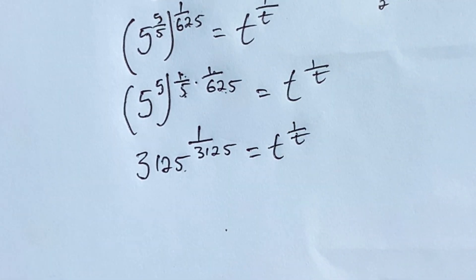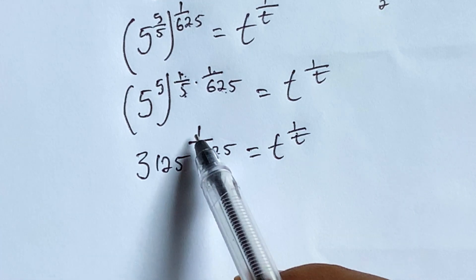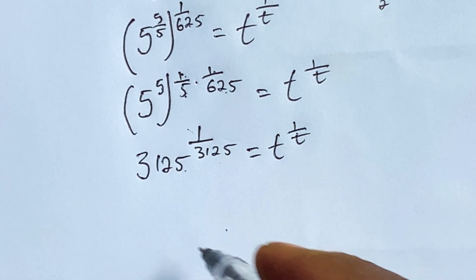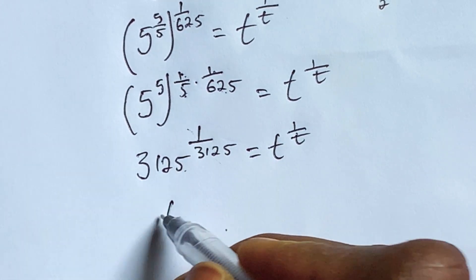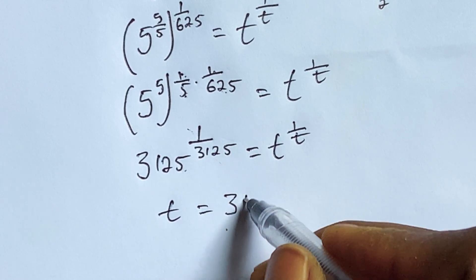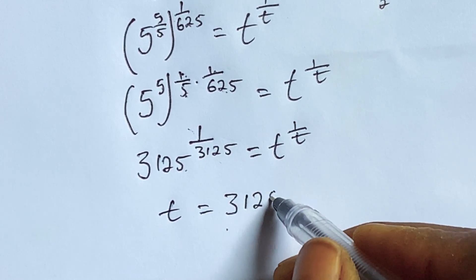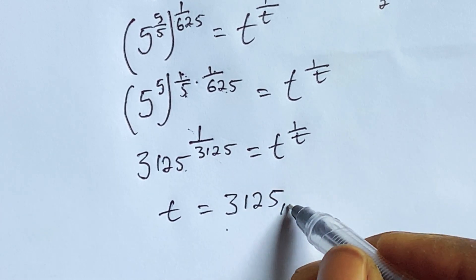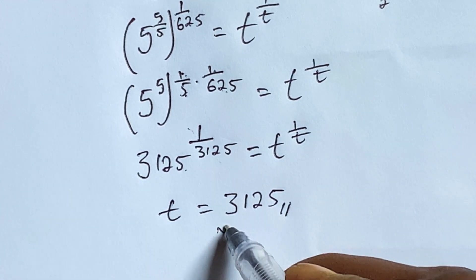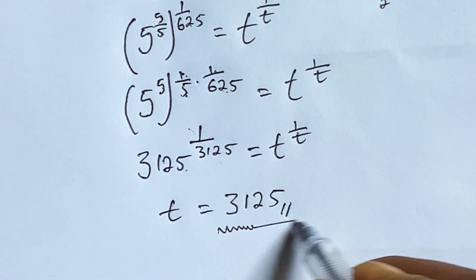The power of this corresponds to this, meaning our t is equal to 3125. This is the final answer of the equation. Enjoy this video, subscribe, and tell me your thoughts in the comment section. Bye!